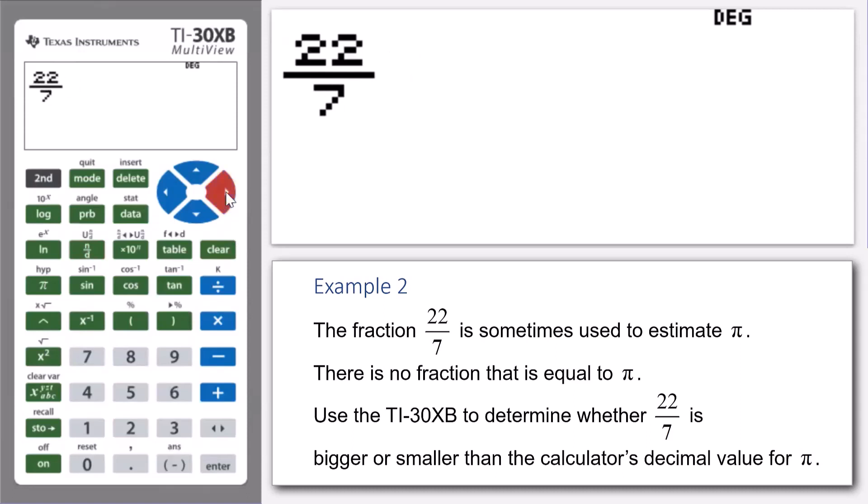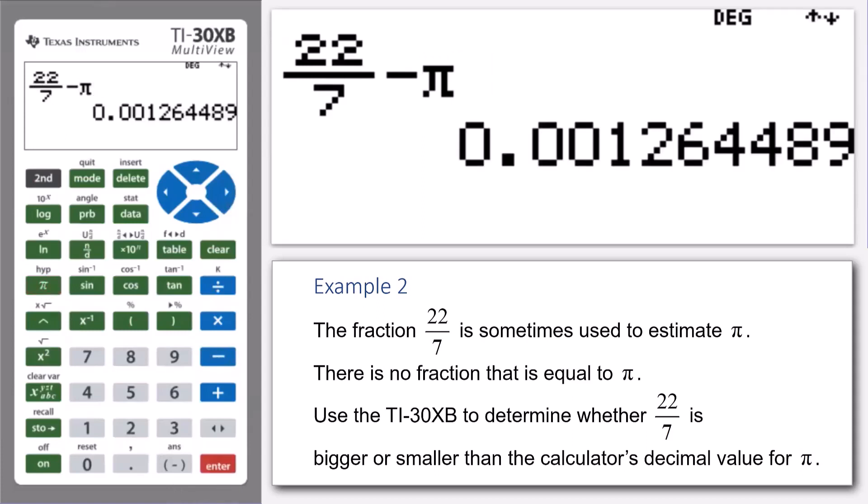We press the subtraction key. Now, pi has its own button, so we press the pi key there, and we press enter. And we get an answer of 0.001, et cetera, et cetera.